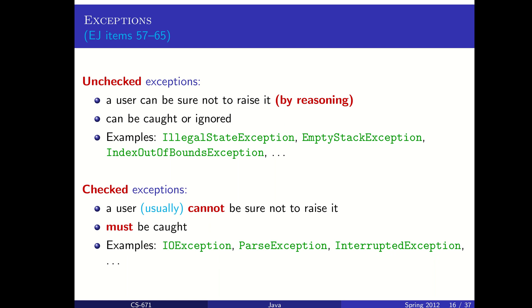Checked exceptions are ones that you often can't be sure you won't raise. IO exceptions are a good example: I could check that the file I want to open exists before I open it, but it's always possible that another program might have deleted that file between the time I checked and the time I go to open it. Similarly, we have things like network connections, interruptions within your program, parsing errors — things we might not be able to tell are going to happen. They could happen from a change in conditions outside the control of our program, so we can't necessarily write code to avoid them.